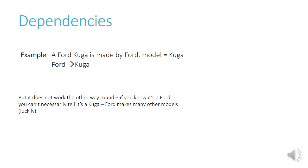An example would be the Ford Cougar. Ford Cougar is made by Ford; the model of the car is the Cougar. So Ford causes Cougar, or Cougar is dependent on Ford. It doesn't work the other way around — if you know it's a Ford, you can't necessarily tell it's a Cougar, because Ford makes many other models of cars.